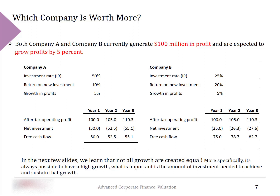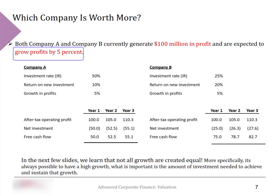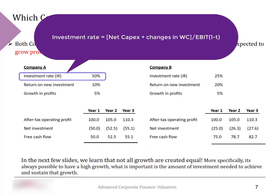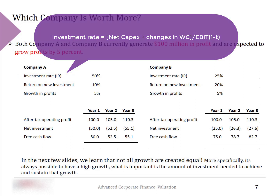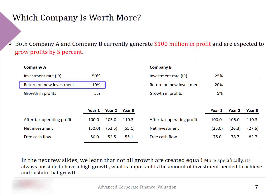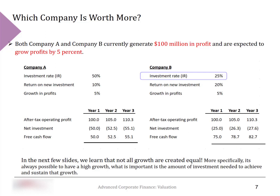To illustrate, let's look at this example. We have two firms with the same after-tax EBIT and the same growth on earnings. The companies differ in their investment rates and return on capital. Company A invests 50% of its after-tax EBIT with a return on capital of 10%, while Company B reinvests only 25% — half as much — but has a return on investment twice as high at 20%.